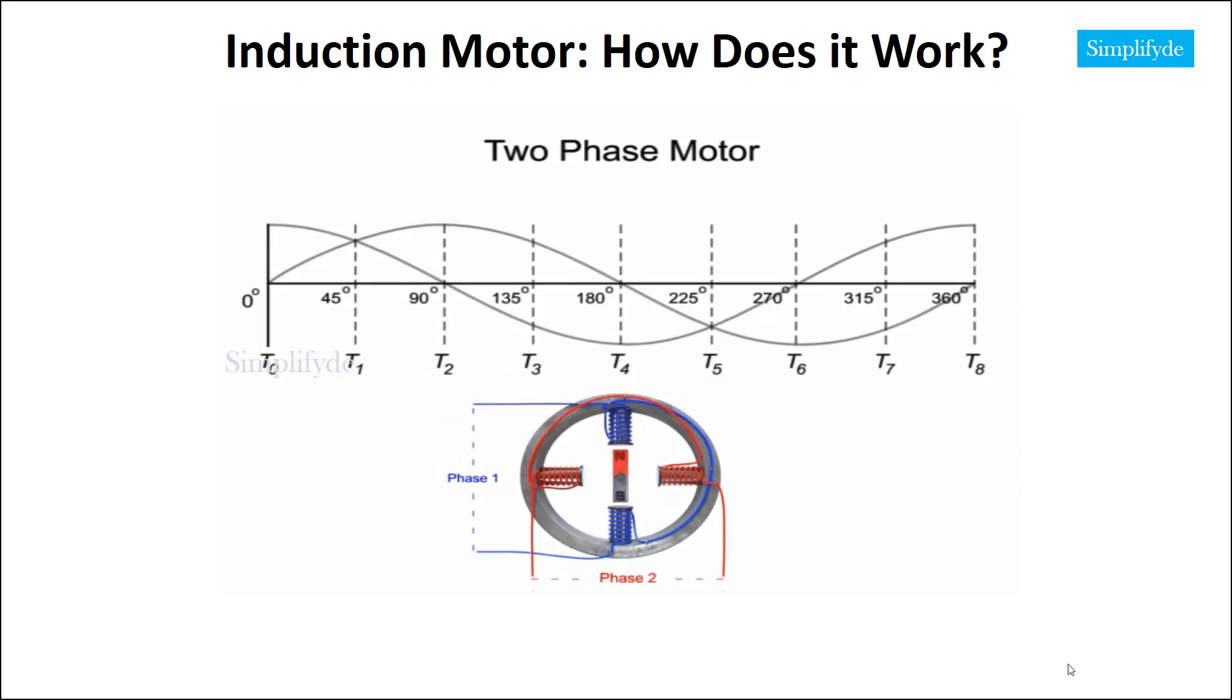The two sinusoidal waves are 90 degrees out of phase. This phase discrepancy is the key to creating rotation of the rotor.